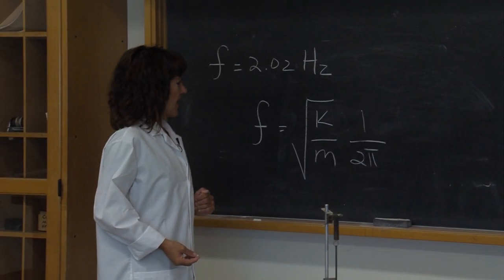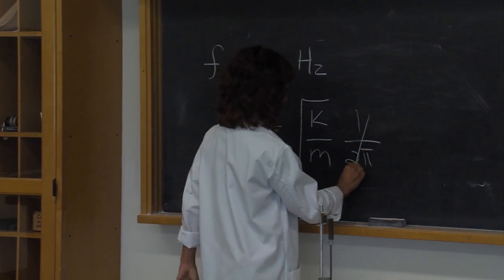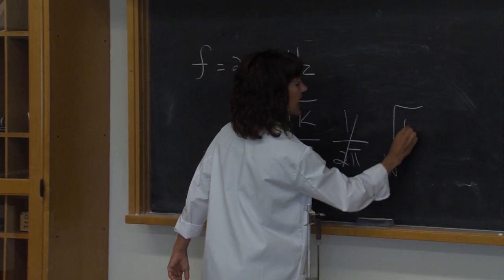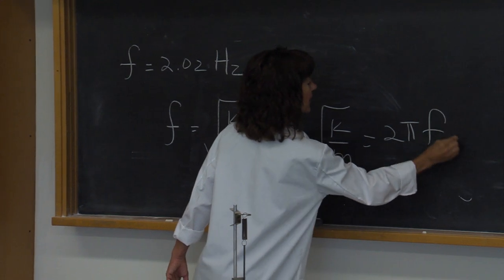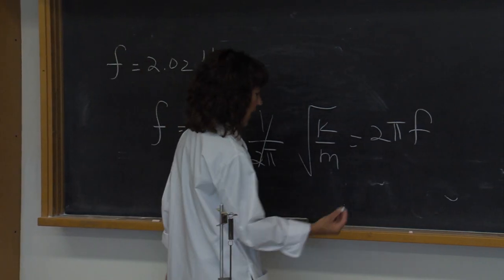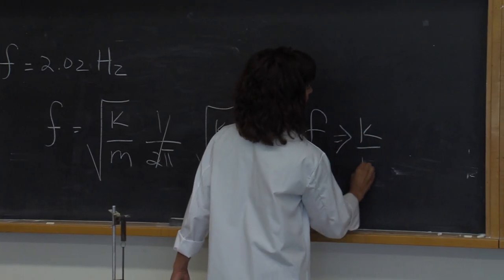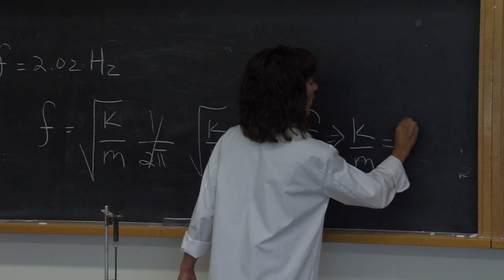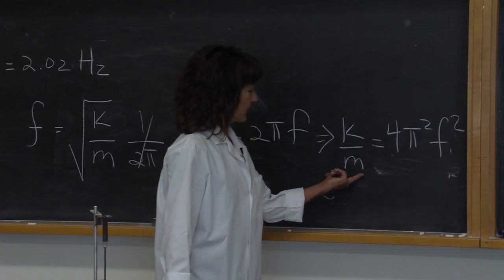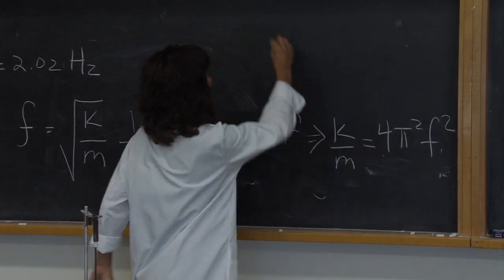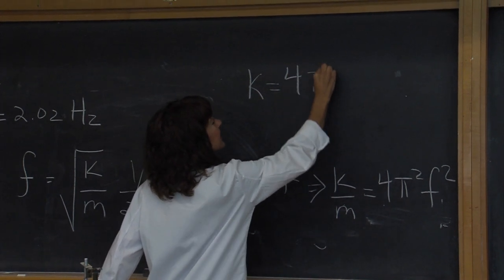To solve for k, first I'll multiply both sides by 2π, and I'll get square root of k over m equals 2πf. Now I'll square both sides and I will get k over m equals 4π² f². And finally, I will multiply both sides by m and I will get k equals 4π² f² m.